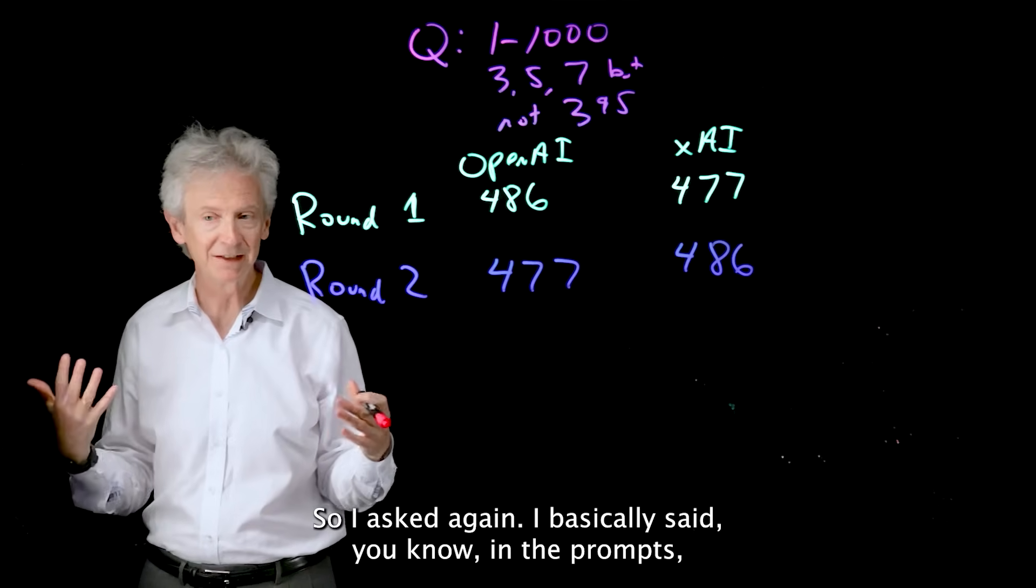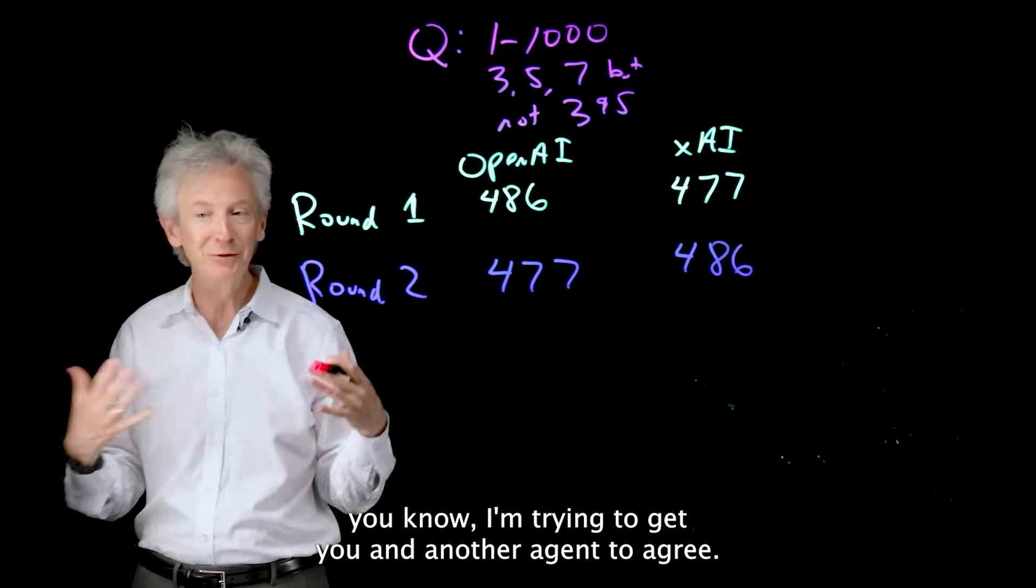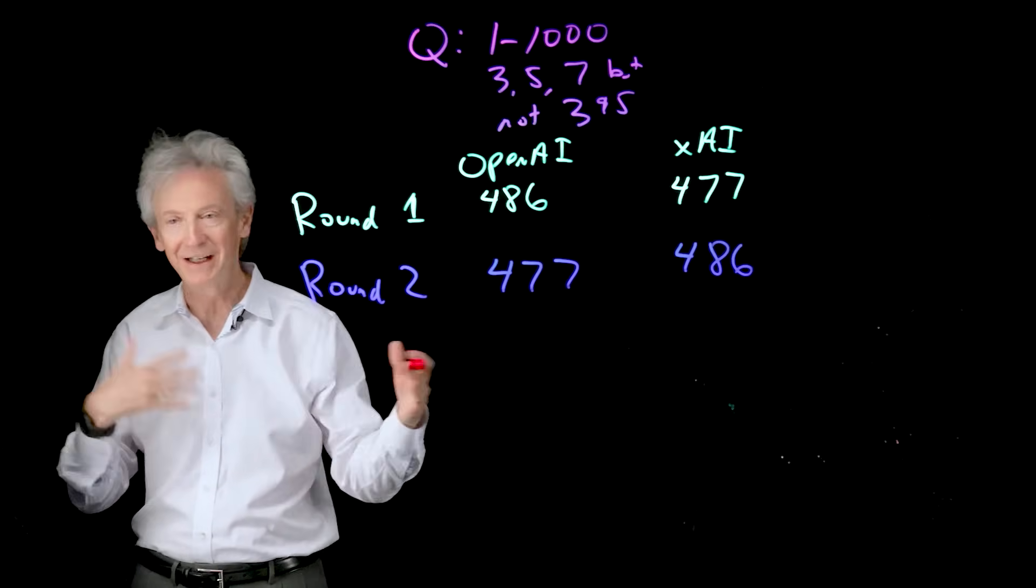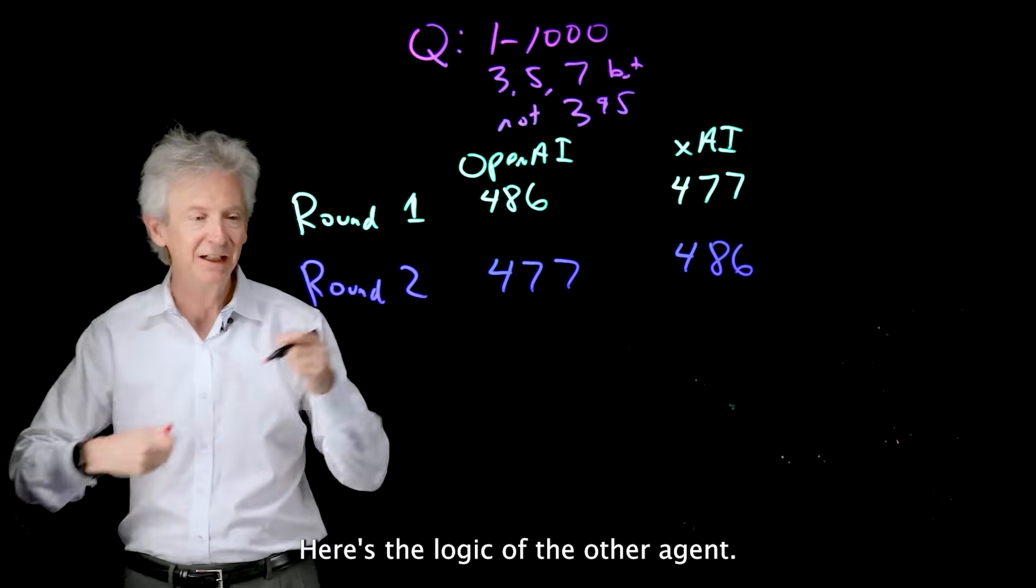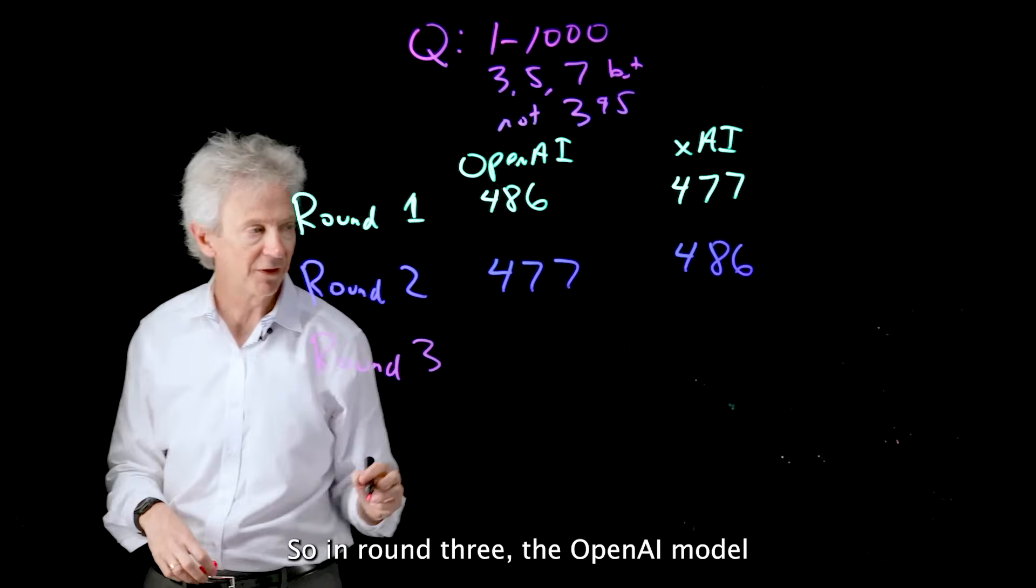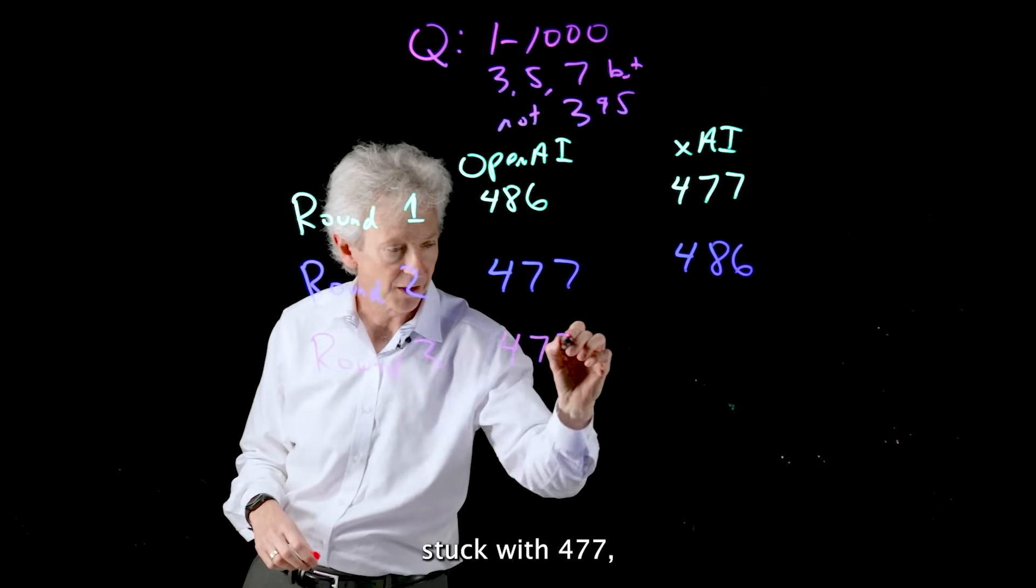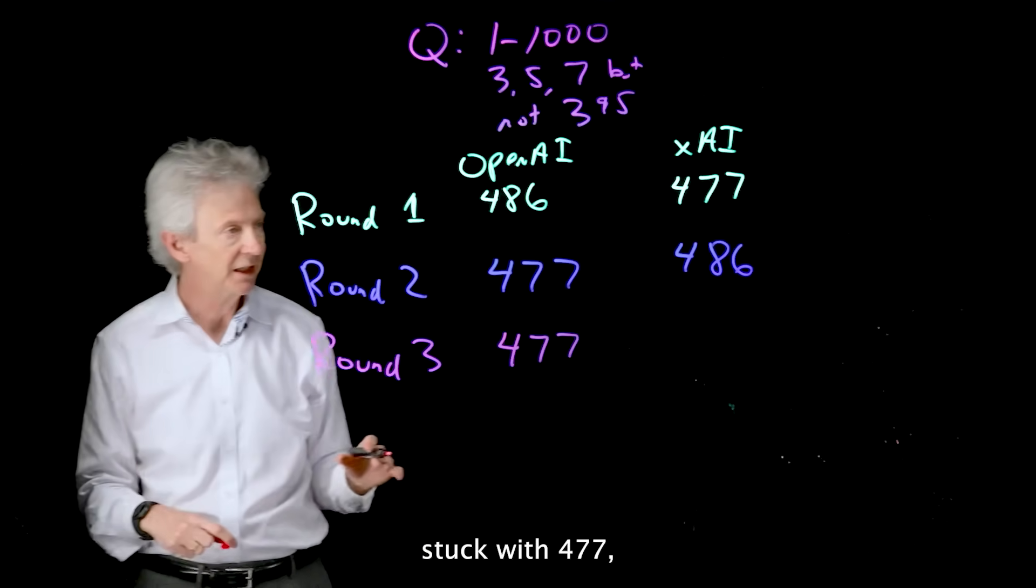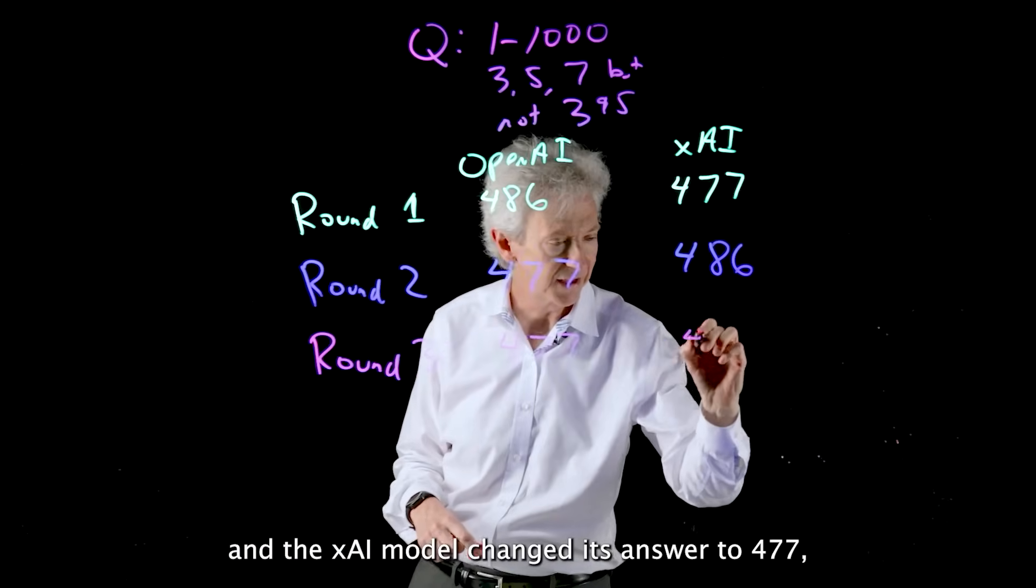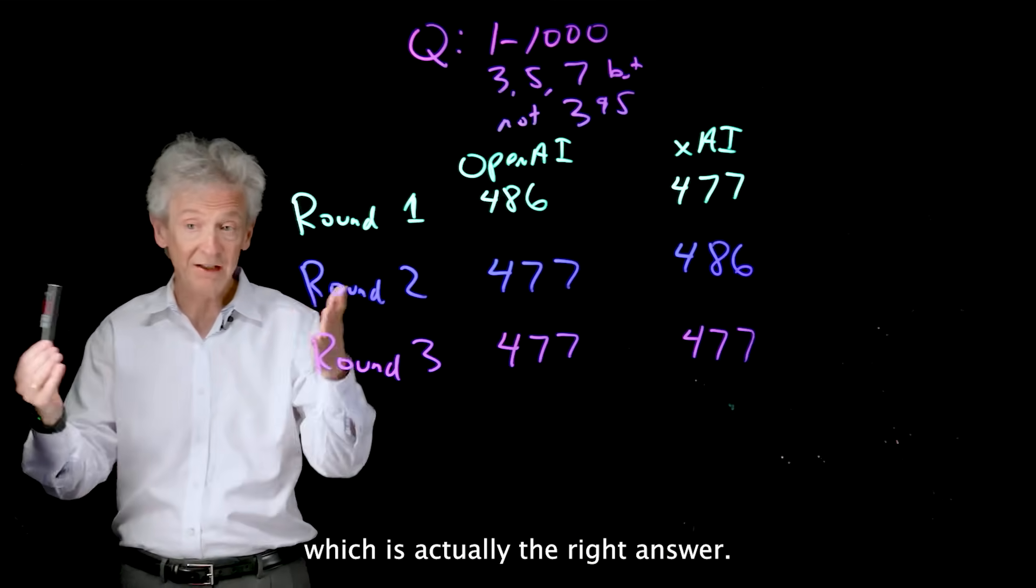So I asked again, I basically said in the prompts, I'm trying to get you and another agent to agree. Here's the logic of the other agent. Would you like to revise your answer? So in round three, the OpenAI model stuck with 477. And the XAI model changed its answer to 477, which is actually the right answer.